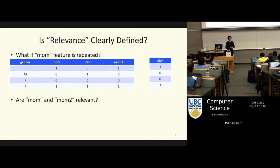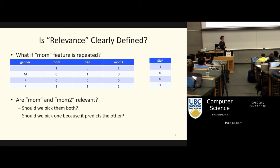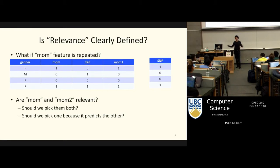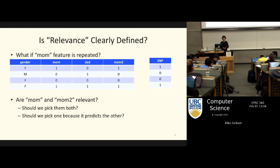Let's say you have a repeated feature — another feature we can call mom2 — that is just an exact copy of the mom column. In that case, are those features relevant? We definitely don't want to throw away both of those features with our feature selection algorithm, but we don't really need both either since they're the same. So as a test for a feature selection approach, if it might throw away both of these features, then we should be very worried about that particular feature selection algorithm.